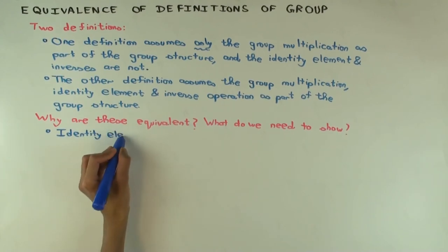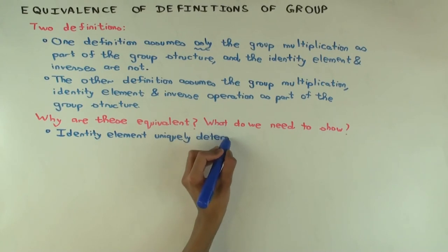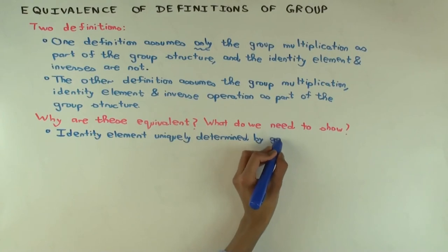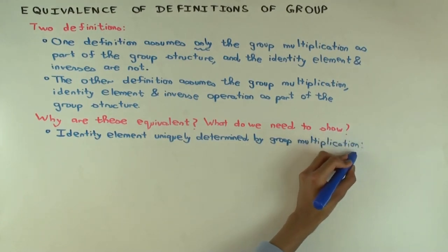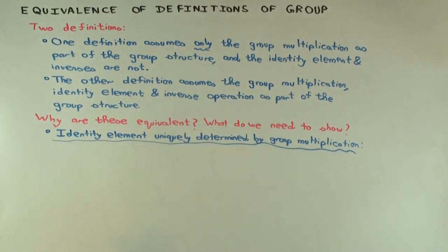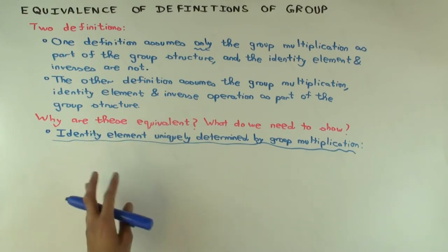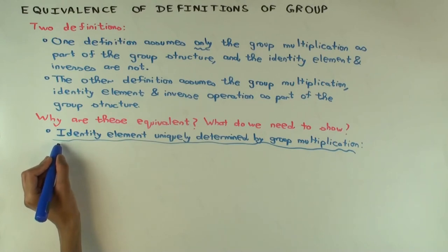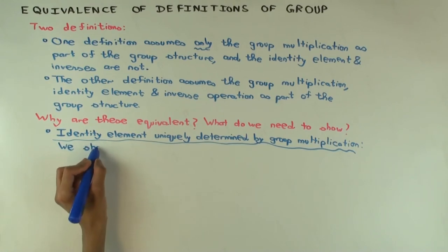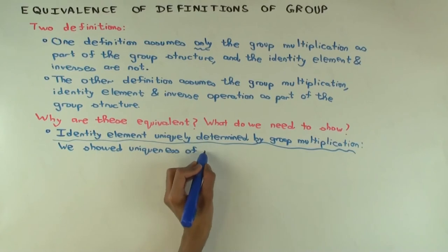The identity element is uniquely determined by the group multiplication. What do we need to show — or rather, what have we already shown, if you've seen previous videos? We've shown that in any set with any binary operation — not necessarily a group — the identity element is unique. We showed that if you have a left identity element (also called a left neutral element) and a right neutral element, they have to be equal. So if there's a two-sided identity element, it's uniquely determined. We showed this for any magma.